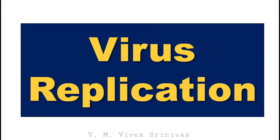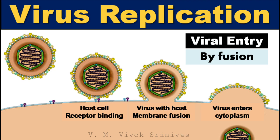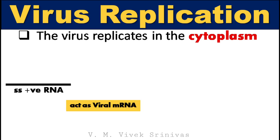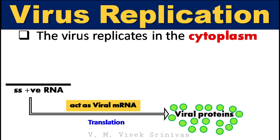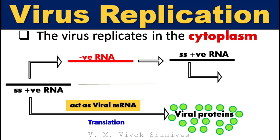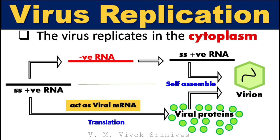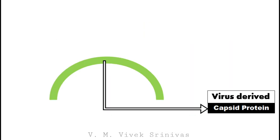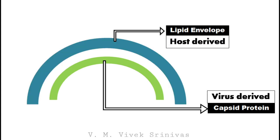Regarding virus replication, this virus enters the host by fusing the viral envelope with the host cell membrane. During fusion, the viral glycoproteins may get integrated into the host membrane. Following entry, the virus replicates in the cytoplasm. Since the genome is positive-sense RNA, similar to mRNA, it can translate directly to viral proteins or be infectious on its own. The positive-sense viral RNA is also transcribed into a complementary strand for further positive-sense RNA synthesis. The transcribed RNA and translated viral proteins self-assemble to form virions, which are released through budding from the host membrane, acquiring their lipid envelope in the process.